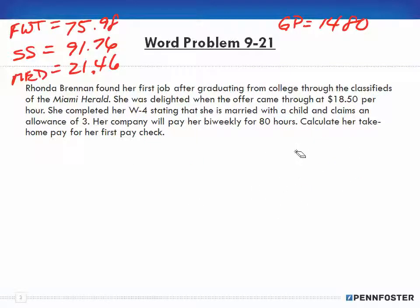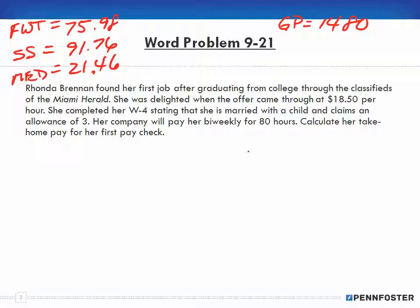To keep things relatively simple — this problem isn't giving us any information about state withholding tax, local withholding tax, or any other additional deductions. When working through these word problems, just use the information that's given. If it had said state withholding tax was 3%, then you would calculate it. But because it isn't given, you don't need to calculate it. For most of these problems, you will always calculate the federal withholding, Social Security, and Medicare. Any other deductions depend on whether they're part of the problem.